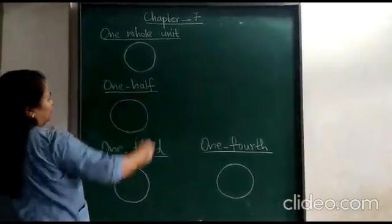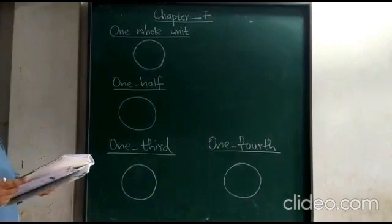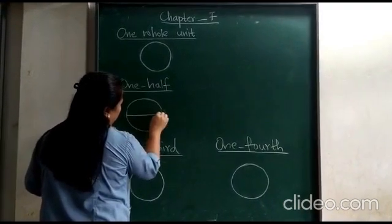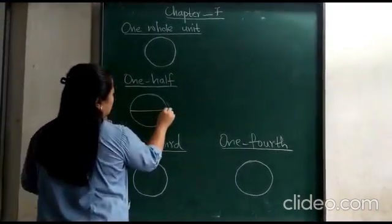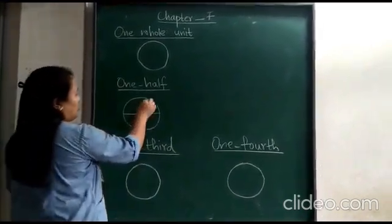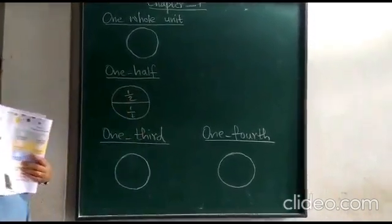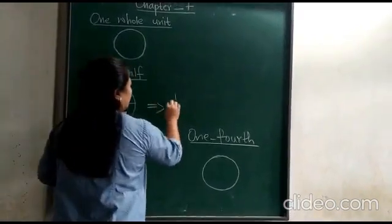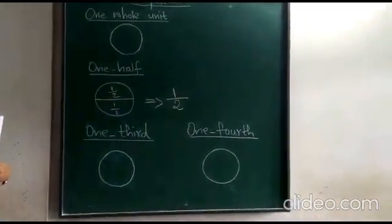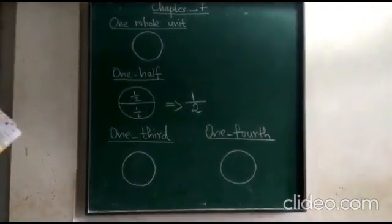Next, one-half of a circle. If we divide this circle into two equal parts, then each part is known as one-half. One-half is written as 1/2. This is the fractional number for half.